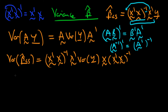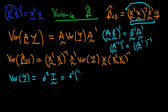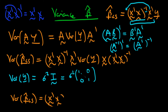Now we apply our assumptions. We assume the variance of Y equals sigma squared times the identity matrix I. Writing it in this form assumes homoscedastic errors — each error has constant variance sigma squared — and no serial correlation, because the identity matrix has zeros in all off-diagonal positions. Substituting this into our expression, the variance of beta hat least squares equals X prime X to the power minus one times X prime times sigma squared times I times X times X prime X to the power minus one.